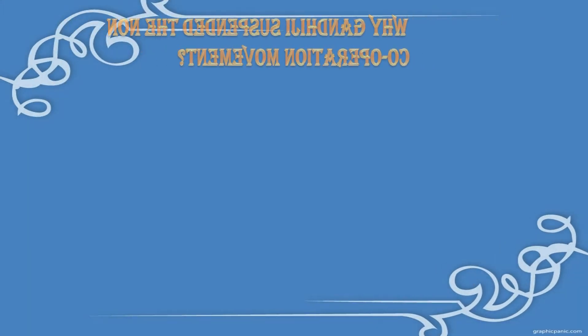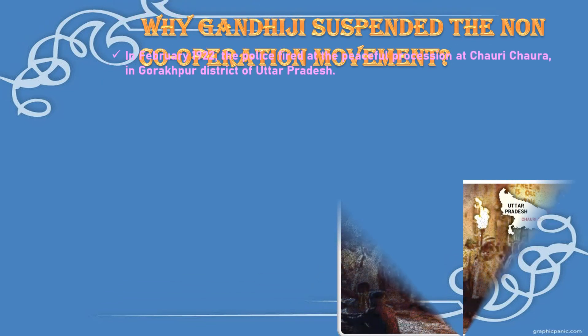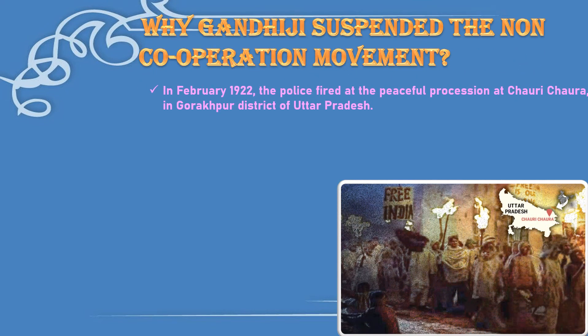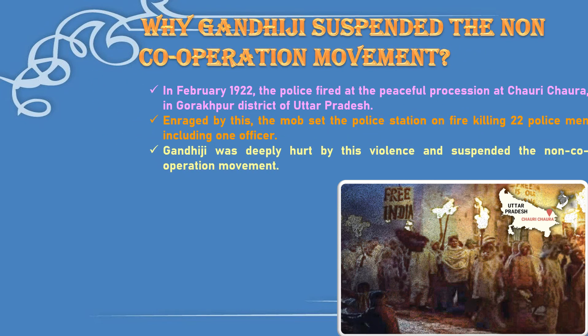Children, Gandhiji suspended the non-cooperation movement because the movement took recourse to violence, which was against Gandhiji's principles. This event took place at Chauri Chaura in Gorakhpur district, Uttar Pradesh, in February 1922. The British started firing at a peaceful procession at Chauri Chaura, and the enraged people set the police station on fire, killing 22 policemen including one officer. Gandhiji was deeply hurt by this violence and suspended the non-cooperation movement.